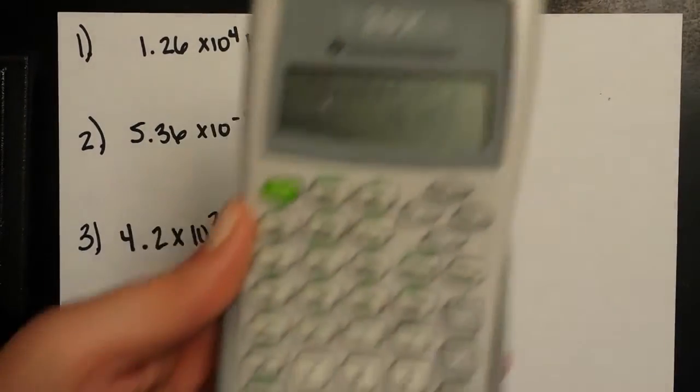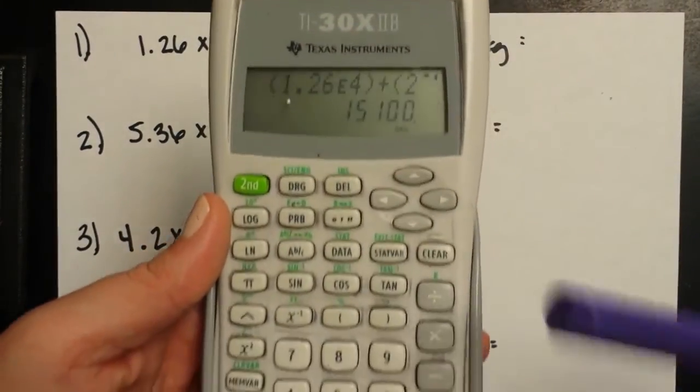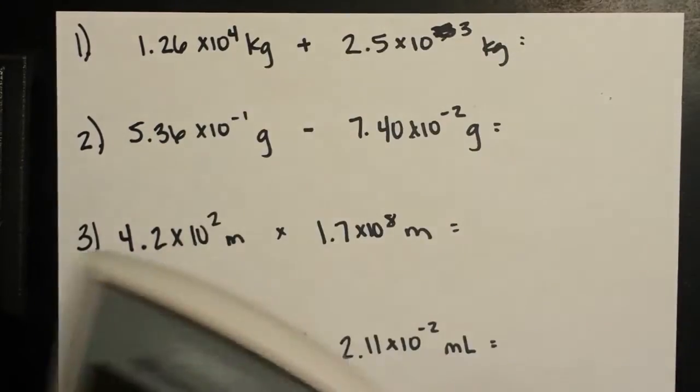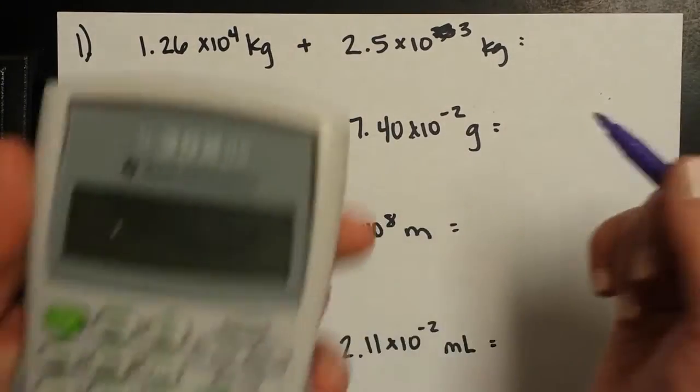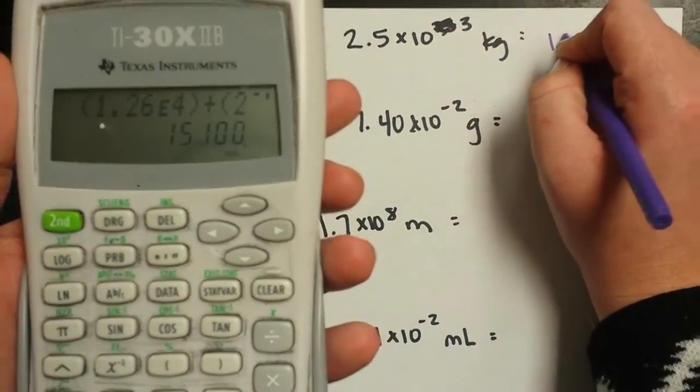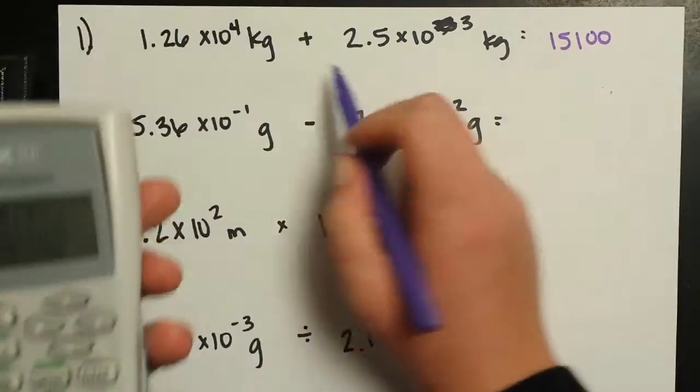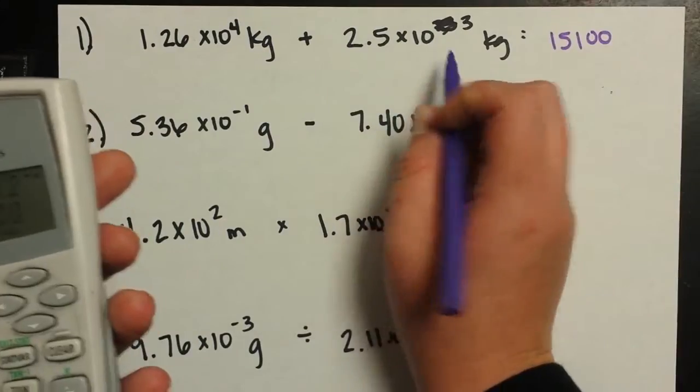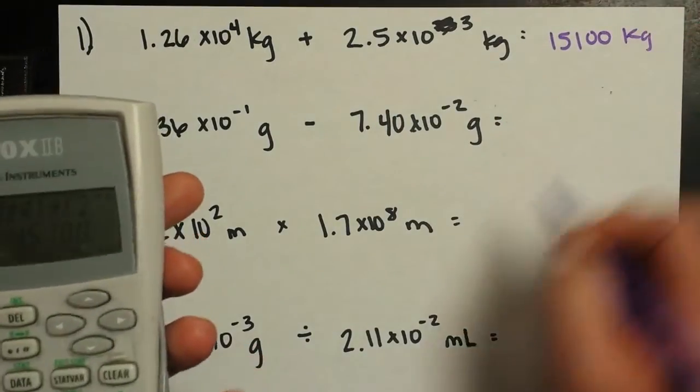When I plug that in my calculator and if your calculator looks different, please plug it into yours as well and make sure that you get the same number for your answer. So I've got 15,100. Kilograms plus kilograms is still kilograms.